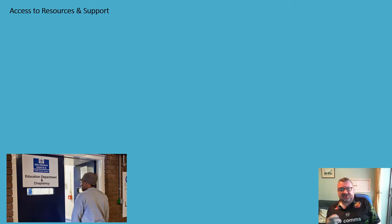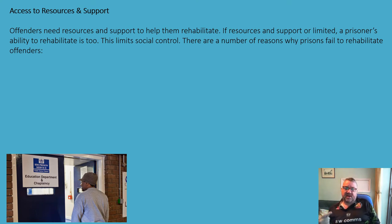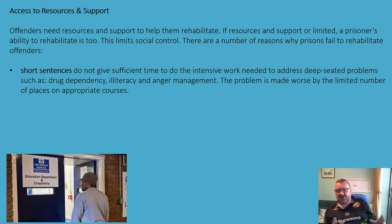This next section goes some way to answering those recidivism rates — these are the barriers of access to resources and support. Few could argue that offenders need resources and support to help them rehabilitate. If resources and support are limited, the ability to rehabilitate is limited too, and that in turn limits social control. There are a number of reasons prisons fail to rehabilitate offenders. Short sentences are certainly one, because they don't give sufficient time to do the intensive work needed to address deep-seated problems such as drug dependency, illiteracy, or anger management.